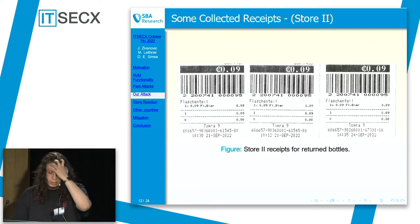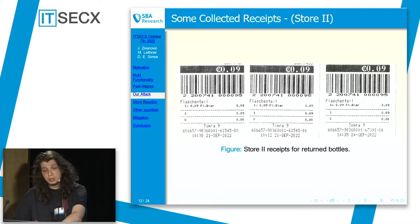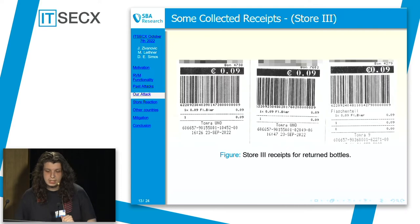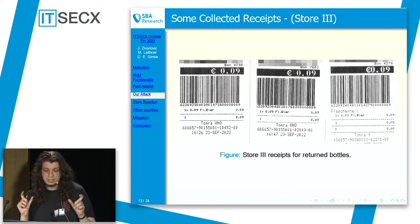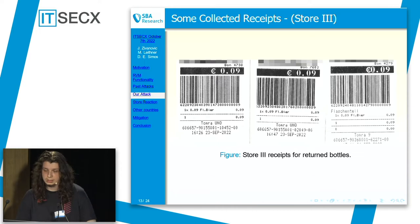Looking at another store, we see different behaviour. We have three receipts from three different times — one bottle returned each time — but the receipts are identical except for the timestamp. The barcode is the same. The third store is similar to the first store: it uses dynamic barcodes, meaning the number differs from receipt to receipt, but it still has some problems we can talk about later.